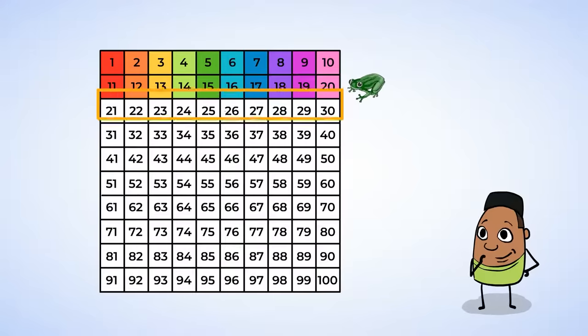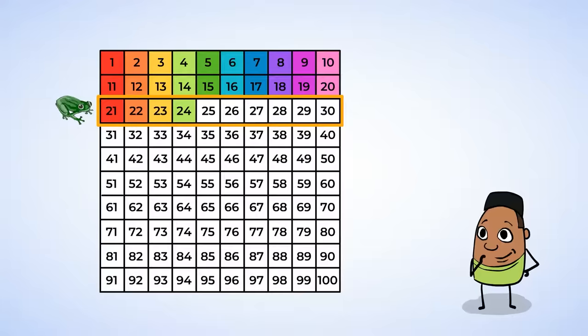Okay, on to the next row. Ready, Froggy? Jump! And here we have 21, 22, 23, 24, 25, 26, 27, 28, 29, 30.